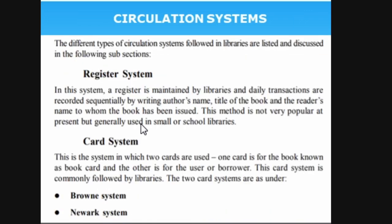Now we look at the different systems. There are three systems: register system, card system, and automated system. The first is the register system — a long register where daily transactions are entered manually by writing the author's name, title of the book, and reader's name to whom the book has been issued. This method is used by some school and college libraries, though it is not very popular.